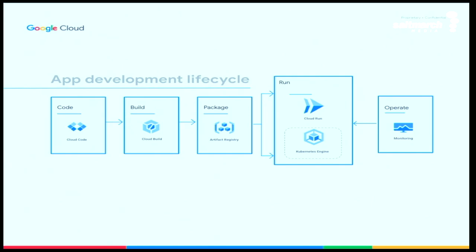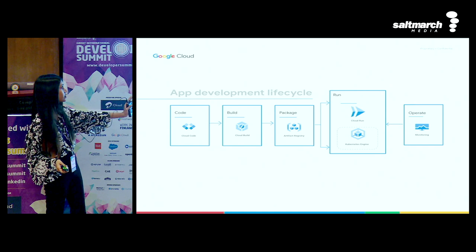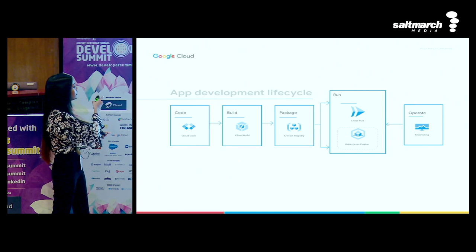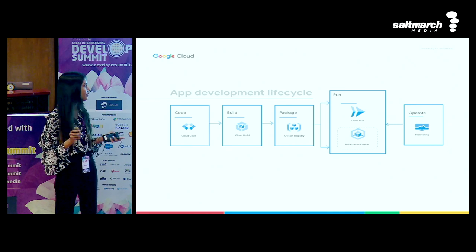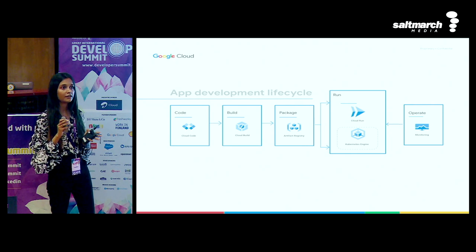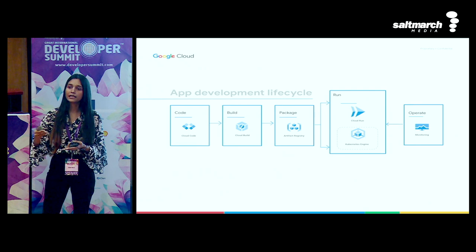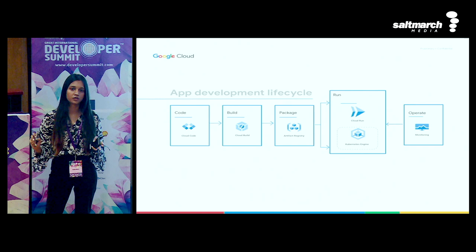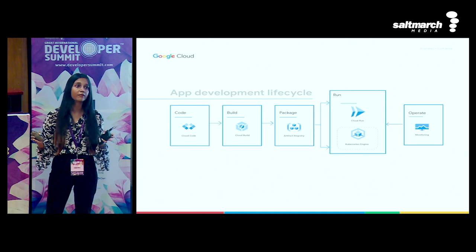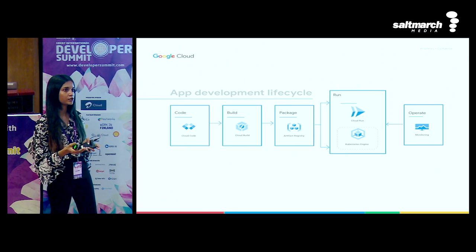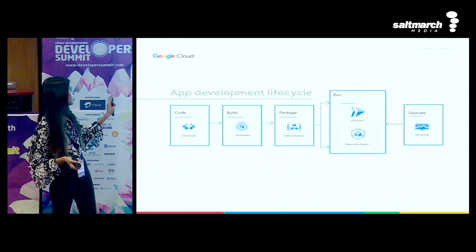This is the complete app development lifecycle - I'm sure many of you are familiar with it already. The first step is your source code - you could have it on your local machine, GitHub, GitHub Enterprise, Bitbucket, GitLab, wherever it is. With tools like Cloud Code and Cloud Build, developers can write code locally, test it locally, build images locally, and deploy to Cloud Run locally without the intervention of any DevOps team. Cloud Code integrates with Visual Studio Code and IntelliJ, so you don't need to teach a Python developer to learn YAML files as well.